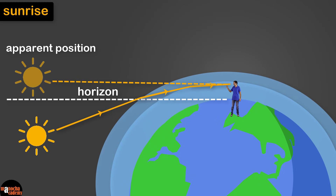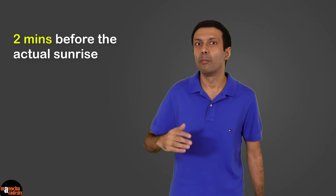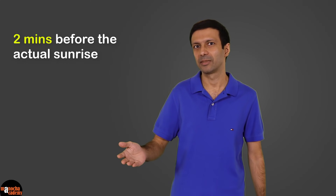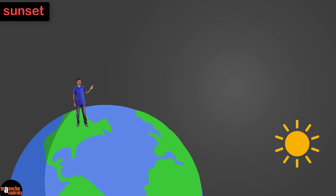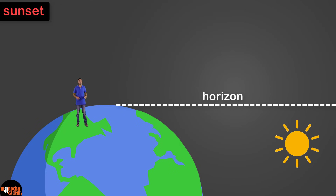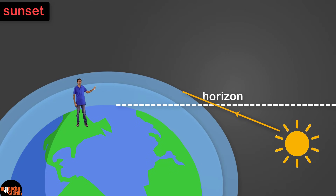This is the apparent position of the Sun. That's why we can see an early sunrise about two minutes before the actual sunrise. Similarly, in the evening, the Sun sets in the west. At sunset, the Sun goes below the horizon. Once again, the sunlight is going from less dense to more dense layers of air, so multiple refractions are taking place.